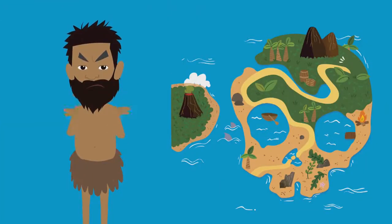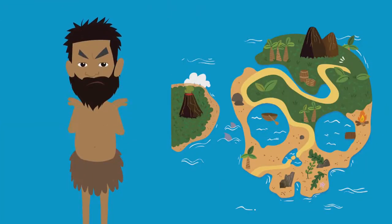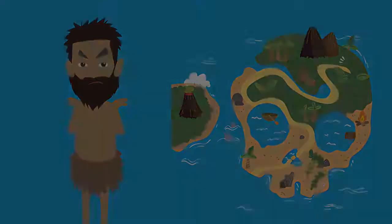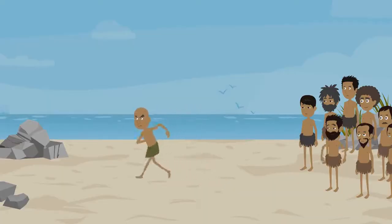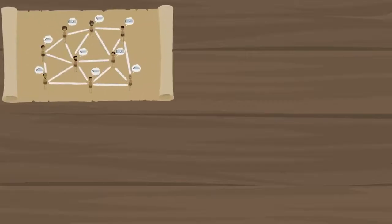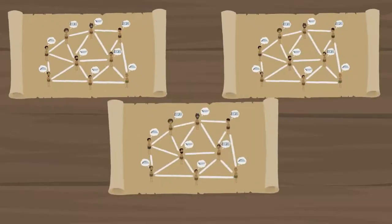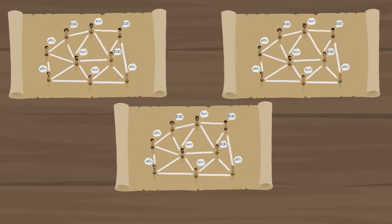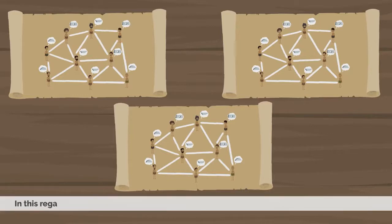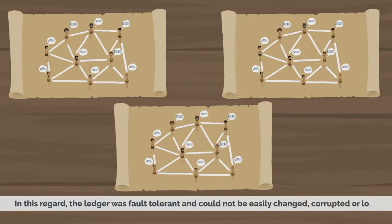It would be very difficult to fool everyone on the island. Even if one tribe member moved away, the tribe still had multiple copies of their mental ledger. In this regard, the ledger was fault tolerant and could not be easily changed, corrupted, or lost.